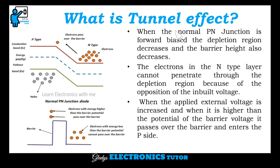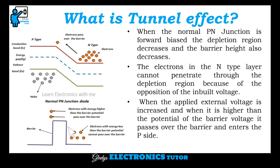So what is the tunnel effect? When a normal P-N junction is forward biased, the depletion region decreases and the barrier height also decreases. The electrons in the N type layer cannot penetrate through the depletion region because of the opposition of the inbuilt voltage. So when the applied external voltage is increased higher than the potential of the barrier voltage, it passes over the barrier and enters the P side.